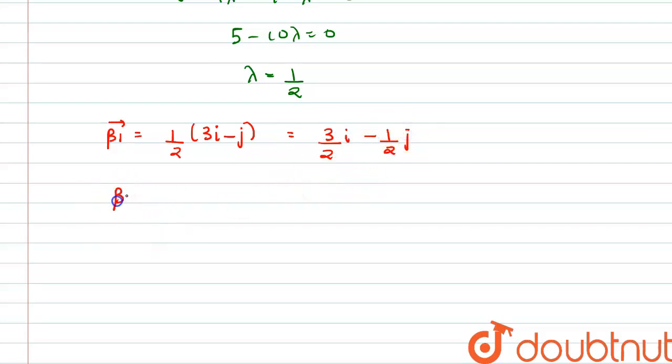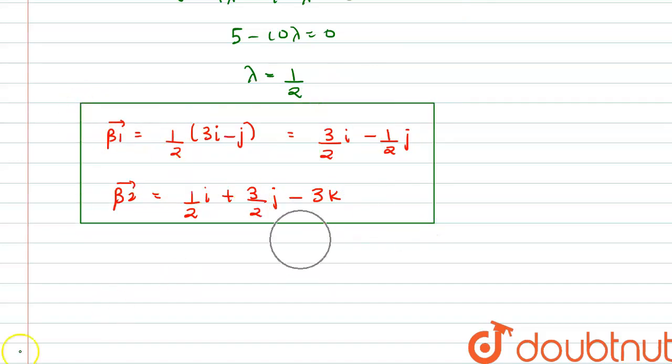Similarly, beta 2 vector would be 1 by 2 i plus 3 by 2 j minus 3k. So here we have found out the value of beta 1 vector and beta 2 vector.